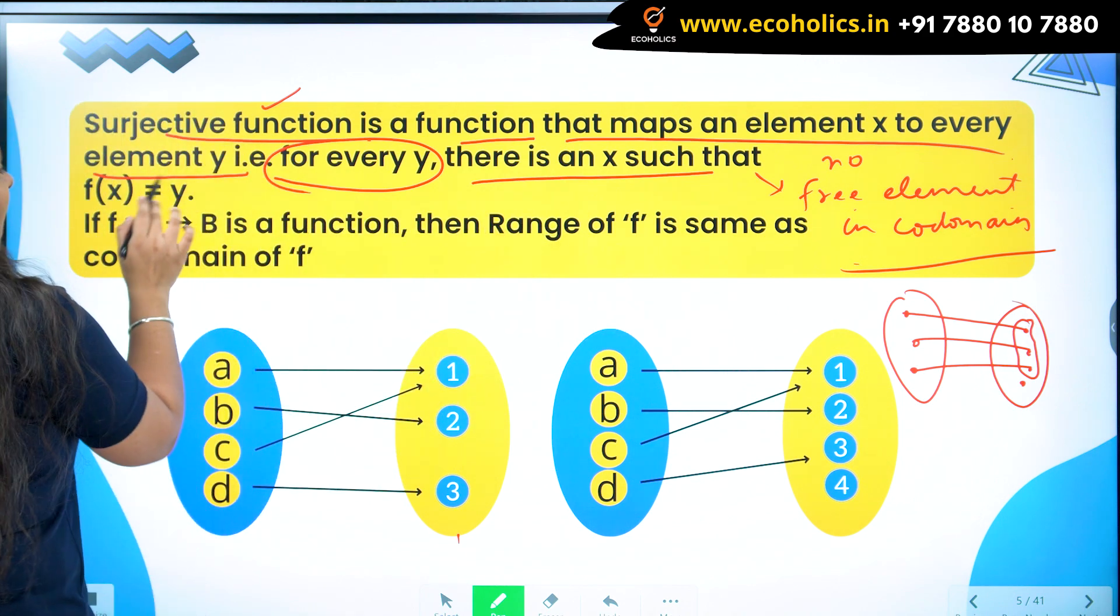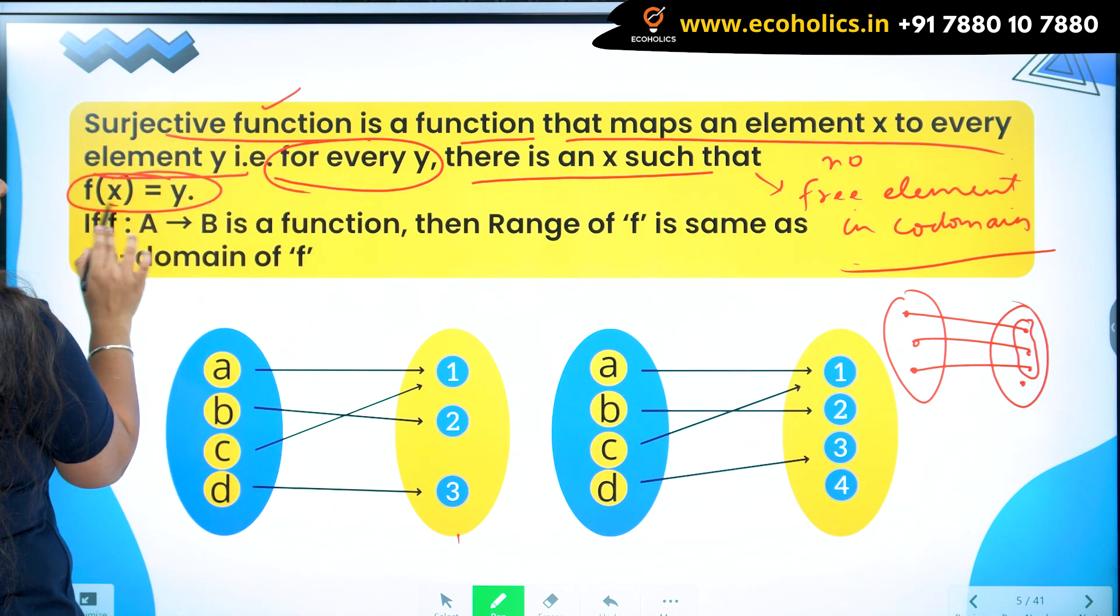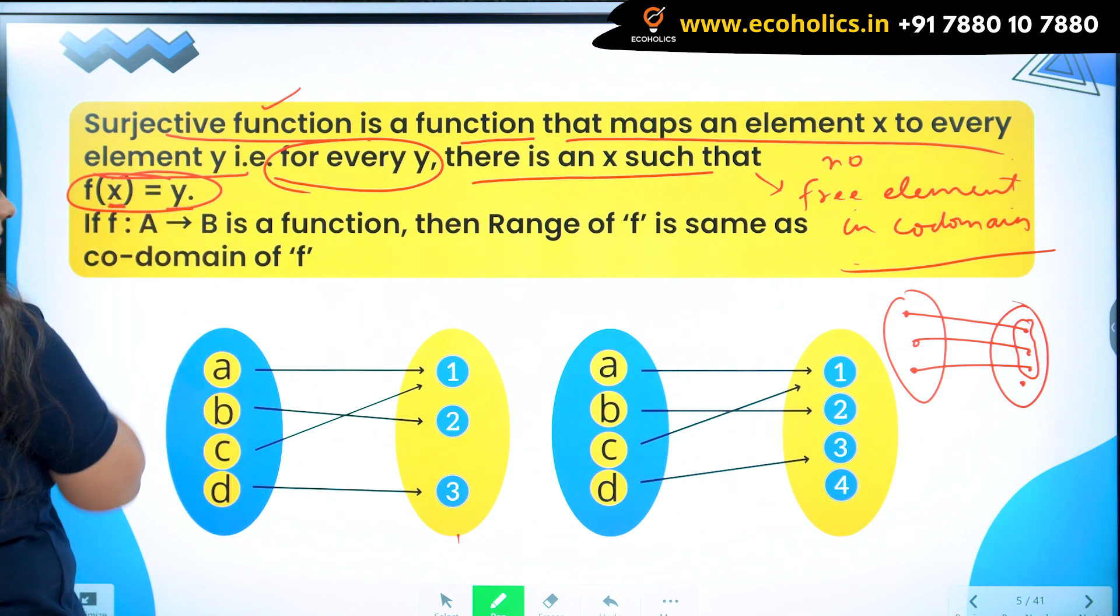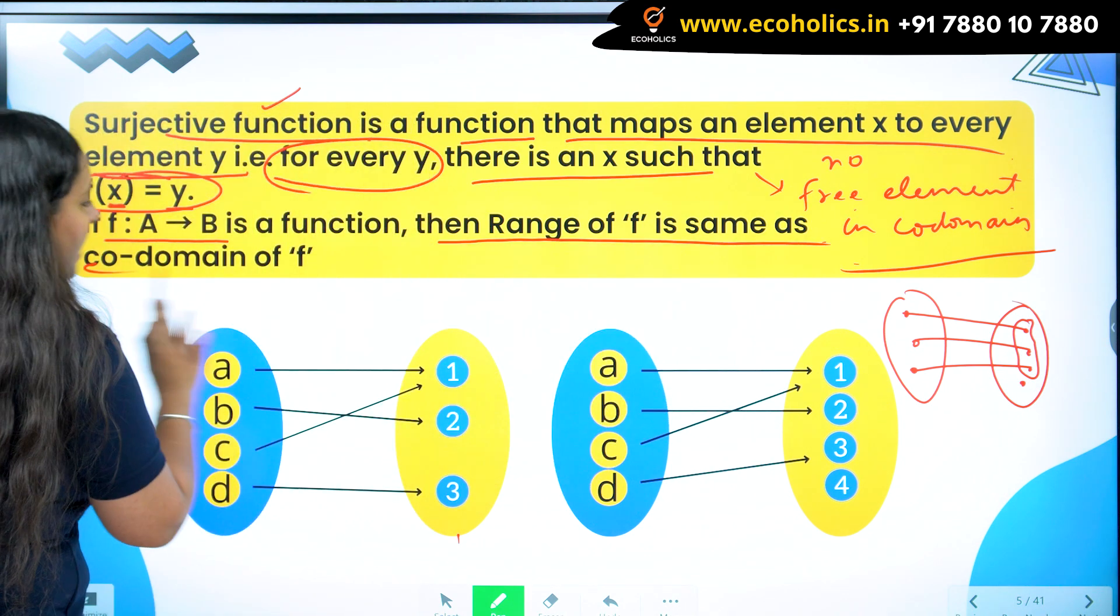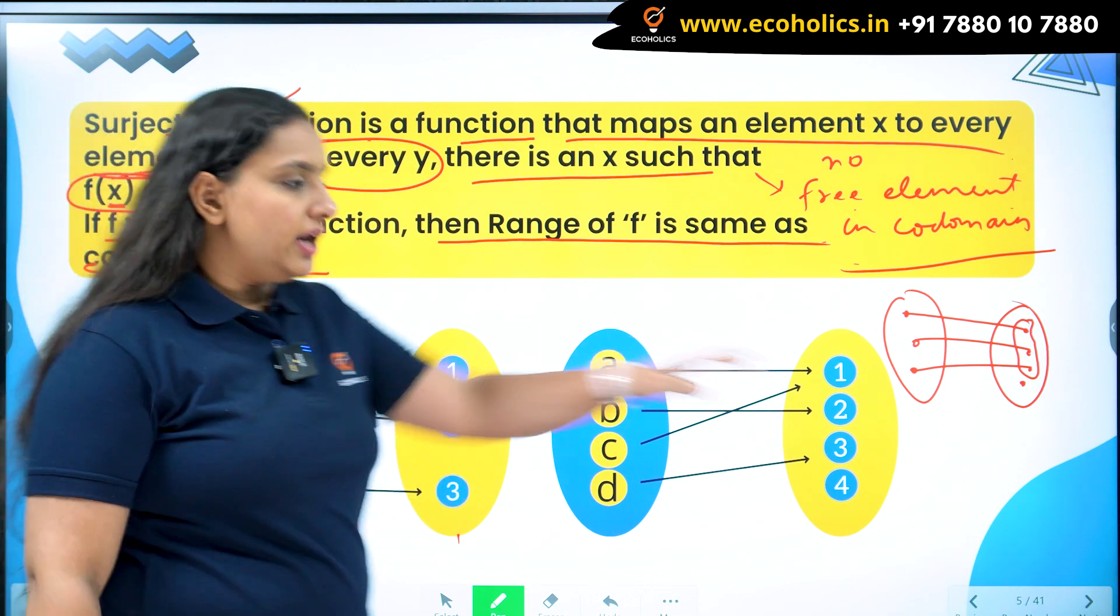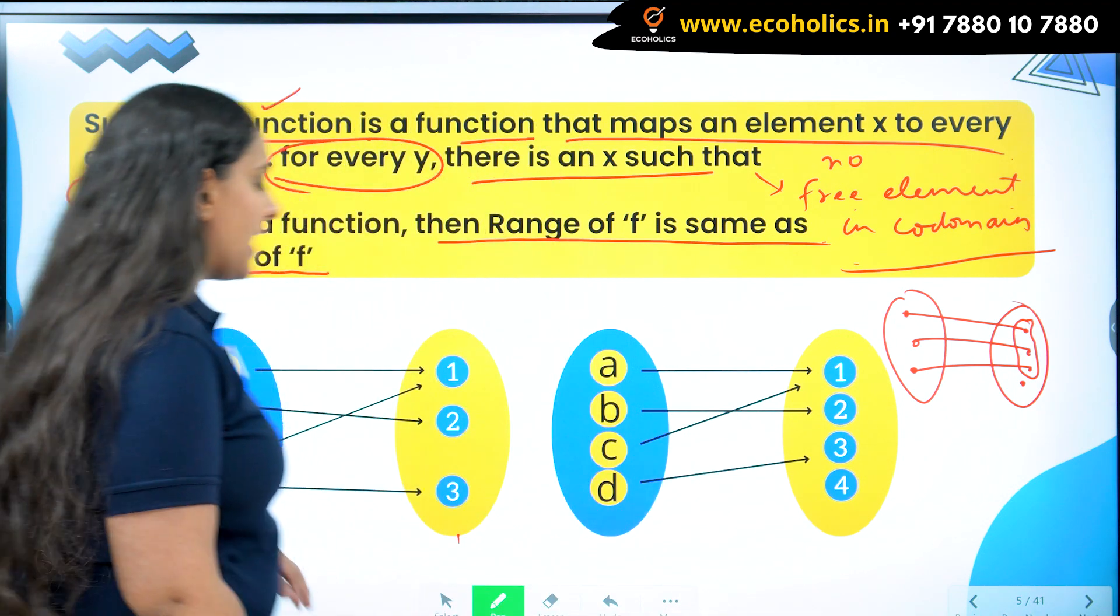So for every y, I should have an x here. Let's say f is a function which goes from A to B, then range of f should be same as co-domain of f. The range and co-domain should be exactly equal.